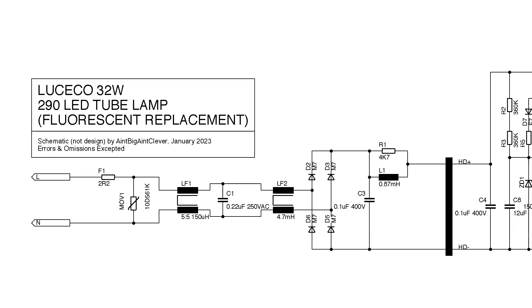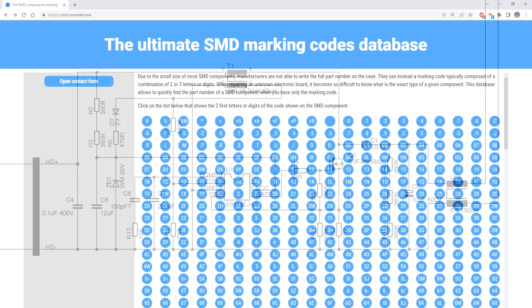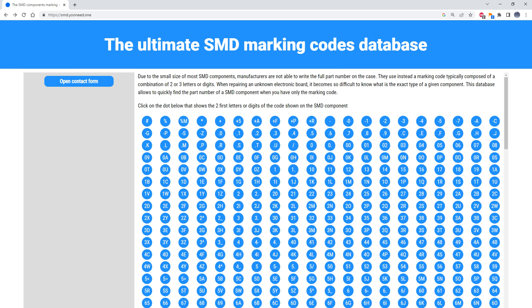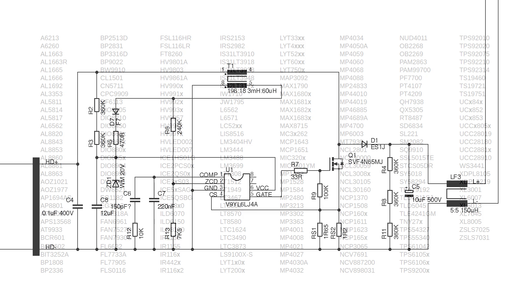The incoming mains voltage once rectified and smoothed is only going to max out at about 350 volts DC so the circuit is clearly boosting that to an even higher voltage to drive the LEDs which explains the 500 volt capacitor across the output. The chip that's controlling it all is marked V9YL6LJ4A. Unfortunately I can't find any data on that chip. I've searched SMD component marking databases. I've looked at the pinouts for all of the ICs shown up on screen now and none of them match with what's on the board.